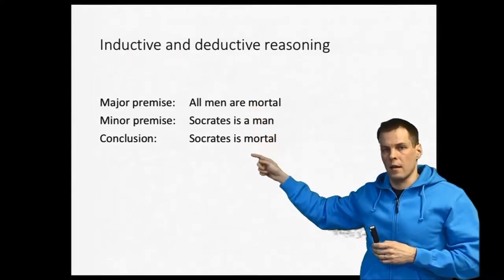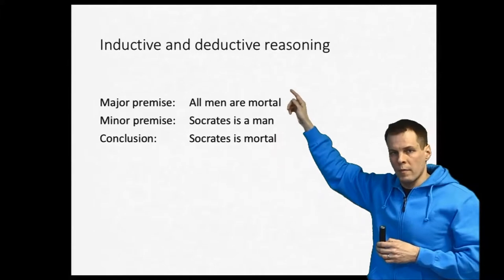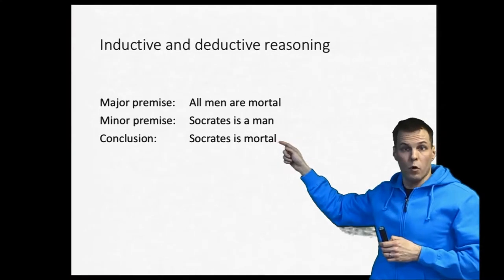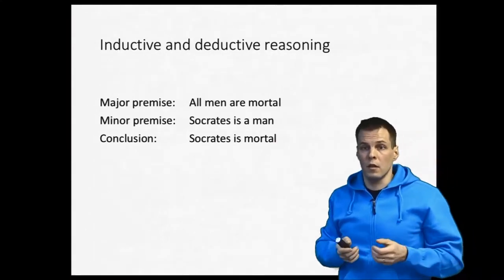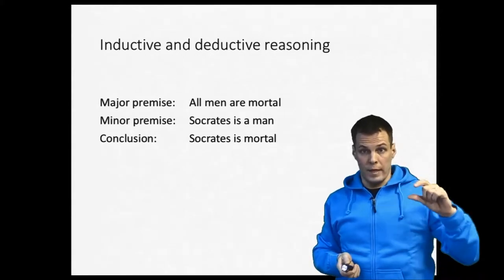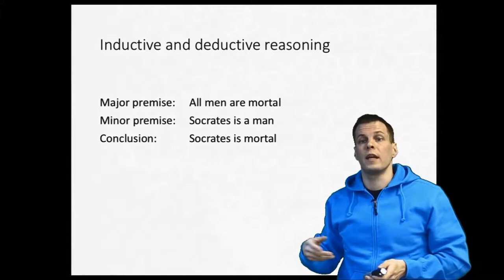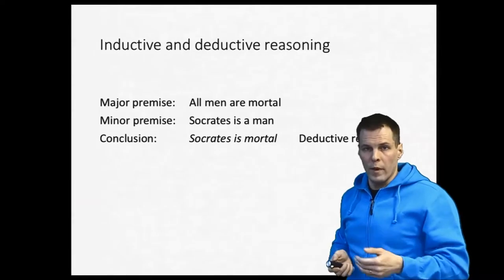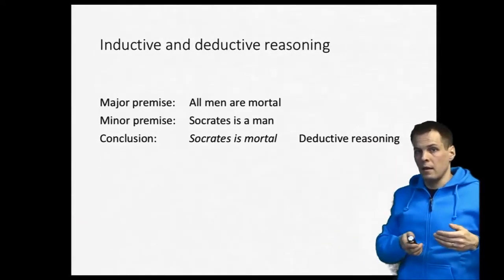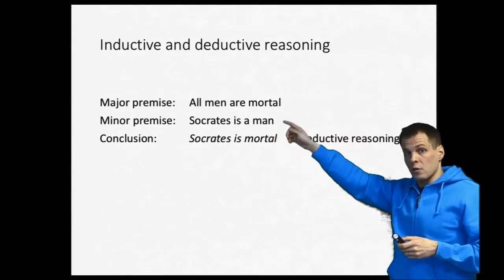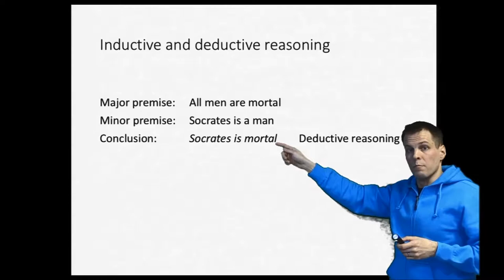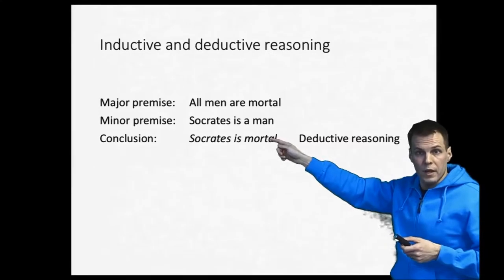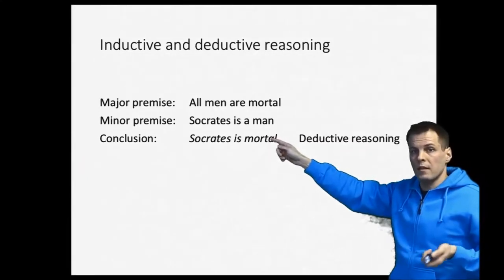Here is a classical example of induction and deduction. The major premise is: all men are mortal. The minor premise is: Socrates is a man. The conclusion is: Socrates is mortal. In deductive reasoning, knowing the major and minor premise, we infer that because both are correct, Socrates must be mortal. If these two claims are true, then the conclusion must also be true — deductive reasoning maintains the truth value.